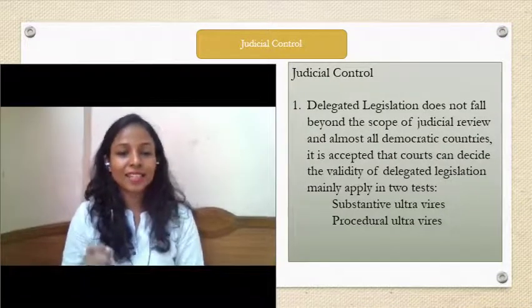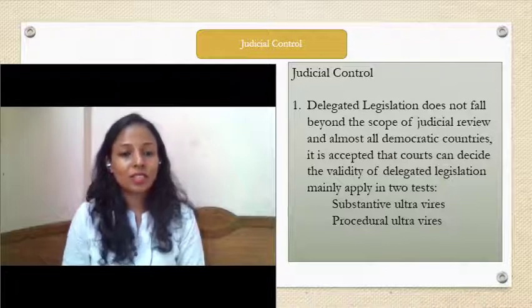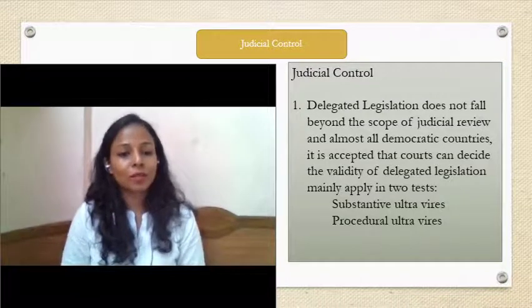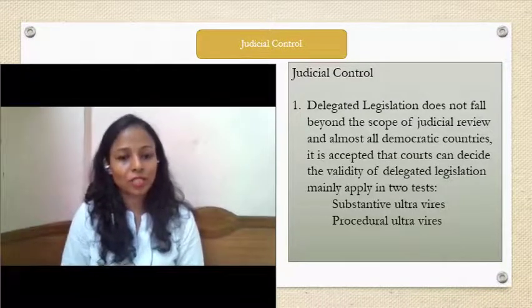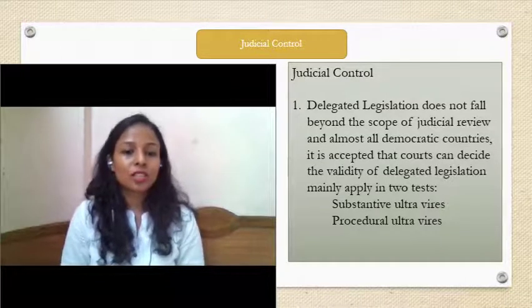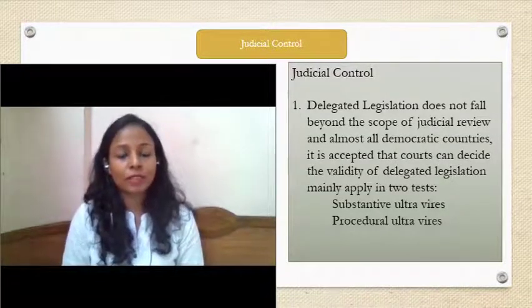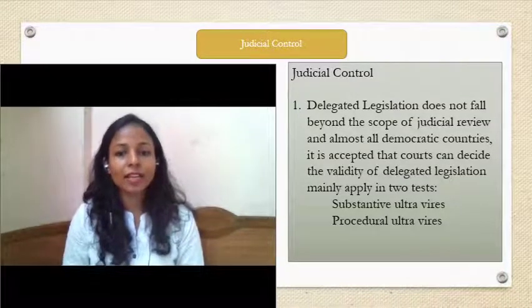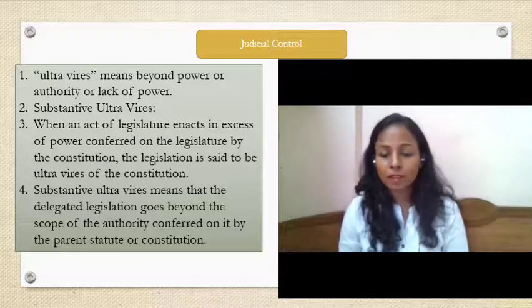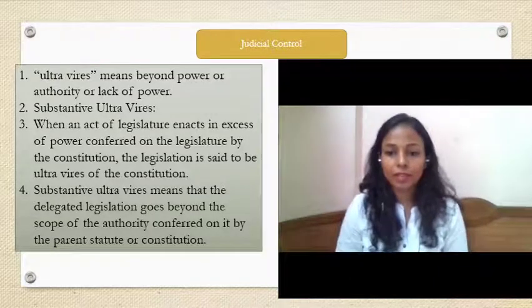Having seen legislative control, we now look at judicial control over delegated legislation. Delegated legislation is not beyond the powers of judicial review — it is under the purview of the courts, which must check whether authorities are functioning within their limits. There are two types of judicial control: substantive ultra vires and procedural ultra vires. Ultra vires means 'beyond power' — performing beyond the described or permitted limits.